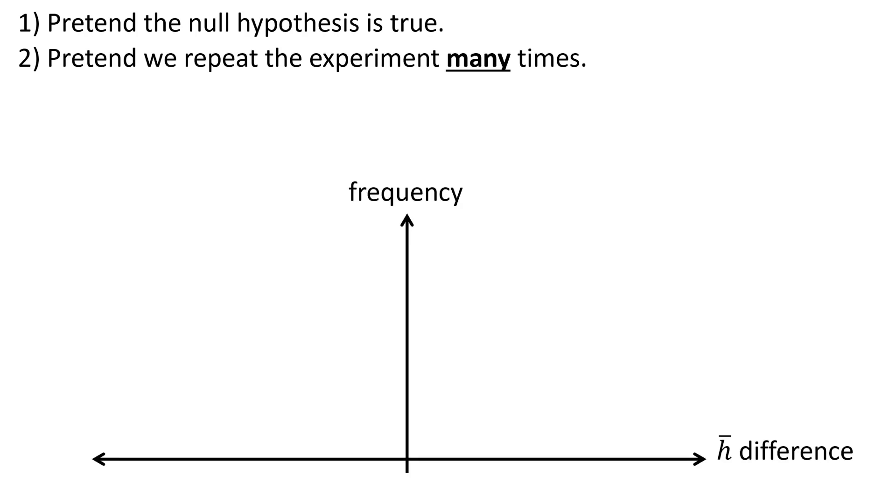For example, maybe you're measuring the height of men and the height of women, and you want to know are men taller or shorter than women. Now, the null hypothesis says that the difference is actually zero, so your experiments should mostly turn up no difference at all.